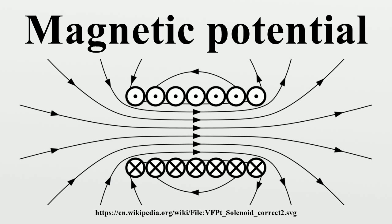The more frequently used magnetic vector potential A is defined such that the curl of A is the magnetic field B. Together with the electric potential, the magnetic vector potential can be used to specify the electric field E as well.